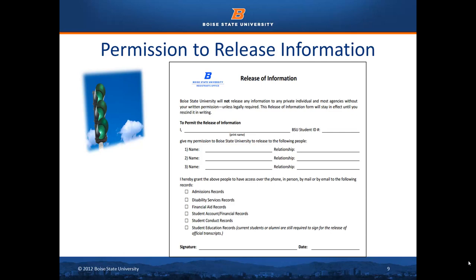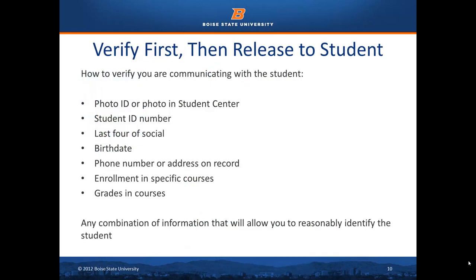Any external request for information should be deferred to the Registrar's Office for release. If working directly with the student, you have multiple ways to verify their identity. These include a photo ID, Boise State or state-issued driver's license, photo of student in student center, student ID number, last four digits of the national ID or social security number if on file, birth date, phone number or address on record, enrollment in specific courses, and grades in previous courses. A combination of these items is likely known only to the student.